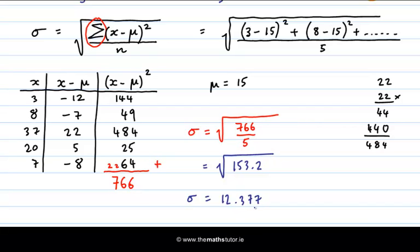And then we get the square root, and we get 12.377. This then gives us our standard deviation. It's the root of the mean squared deviations.